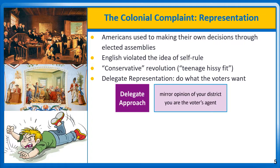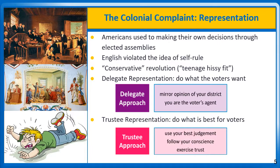The British never understood this view of representation because they operated with a different one. Unlike the colonists, the English did not change their electoral districts every time the population shifted. English elected officials were expected to pursue the good of the whole nation. 'Your representative is not an agent or an advocate,' argued the English statesman Edmund Burke, 'but a member of parliament who must be guided by the general good.' This view is called trustee representation — you do what is best for the voters regardless of what they want you to do. Trustees use their best judgment and follow their conscience in an exercise of trust on behalf of their constituents.